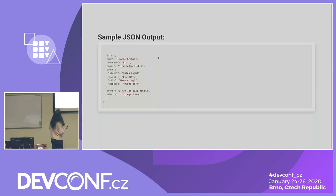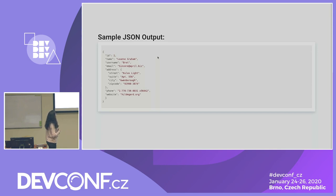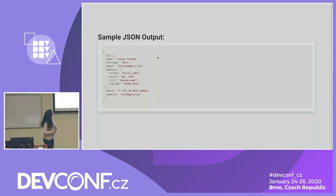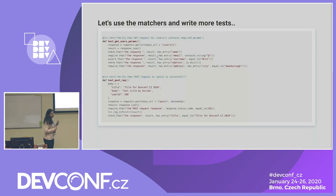Let's consider this as a sample JSON output. We have a few key-value pairs: ID, name, username, email, address — which is itself a dictionary — phone, and website. Let's use the matchers we studied and write some tests based on this JSON response.